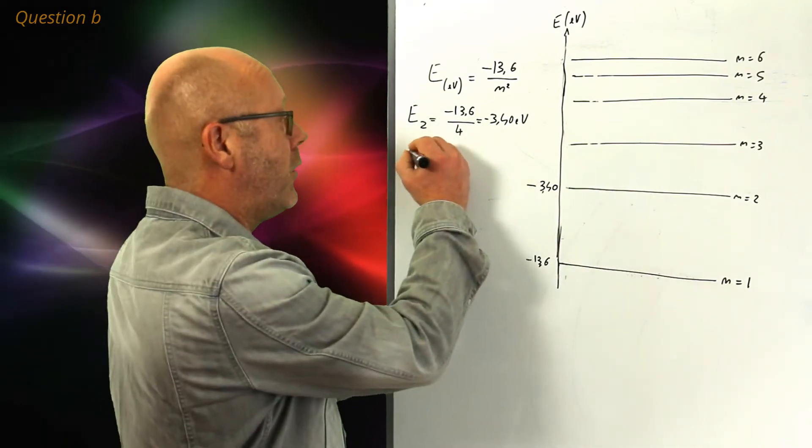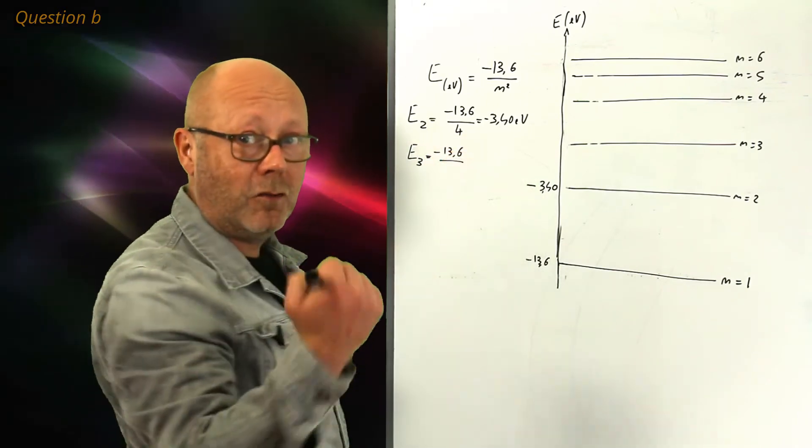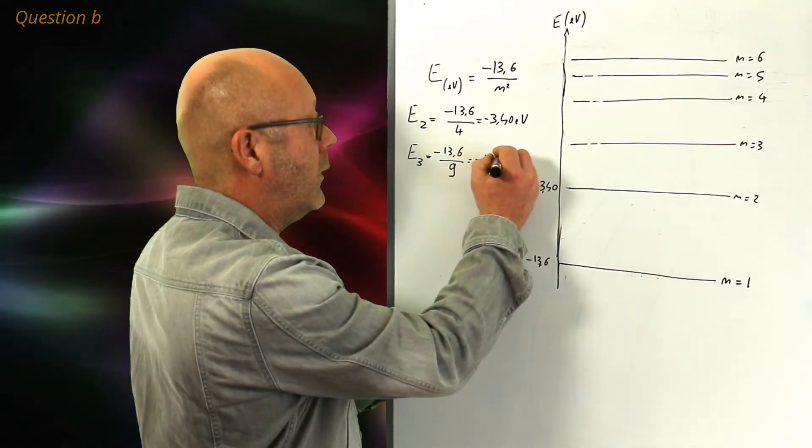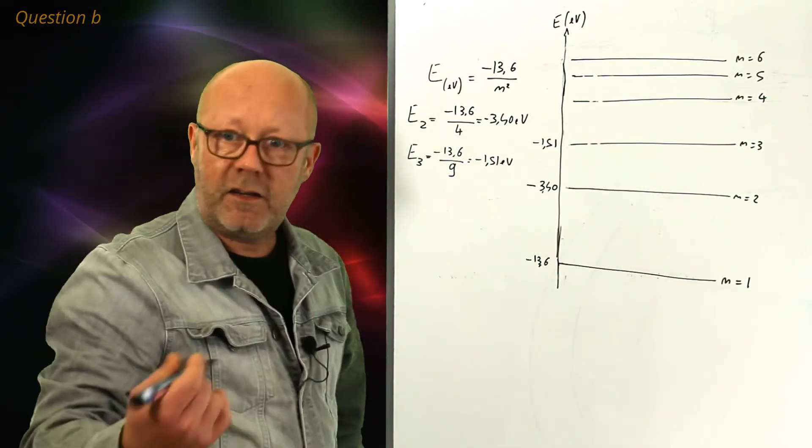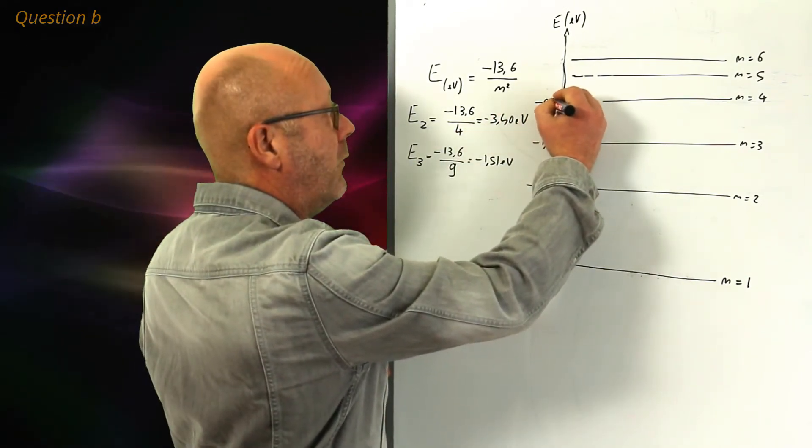You can calculate the third one. E3 equals minus 13.6 divided by 3 squared, so 9, giving you minus 1.51 electron volts. For 4, so you put 16 here, you'd find minus 0.85.